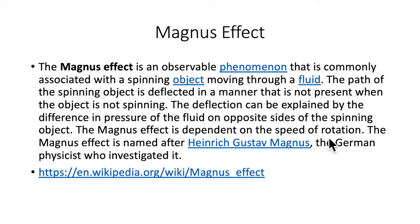The Magnus effect is dependent on the speed of rotation. The Magnus effect is named after Heinrich Gustav Magnus, the German physicist who investigated it. There is also some information that Isaac Newton may have also described this even earlier.